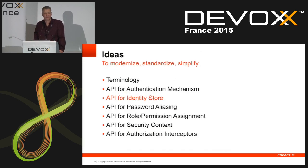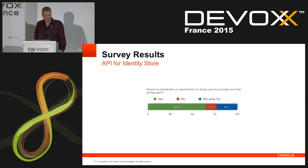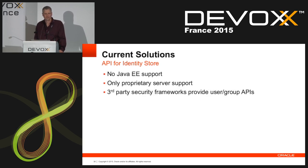The next area is an API for identity store. This is for applications that manage their own users and groups and need access to repositories of identities. These users may be stored in some application-specific repository that the server doesn't know about, like some LDAP. Applications want to manage users without access to any type of server configuration. This was actually a survey question in the EE8 survey: 'Should we standardize on requirements for simple security providers?' And 65.2% said yes, they wanted a standard identity store type mechanism. Currently there's no such support in the EE standard — you can only do this through proprietary server support or third-party security framework providers.